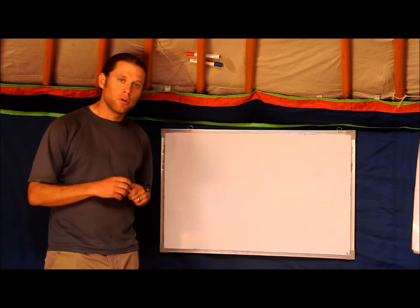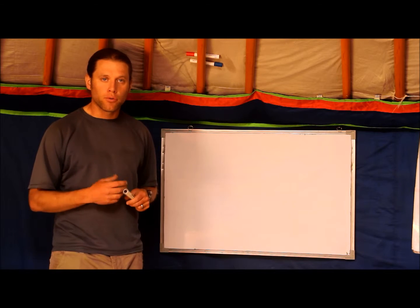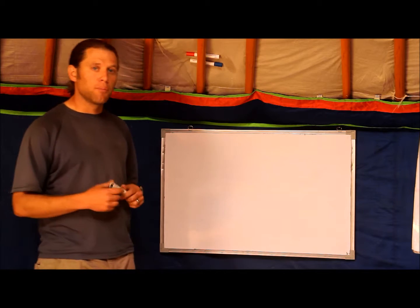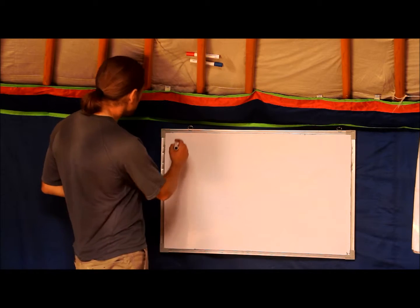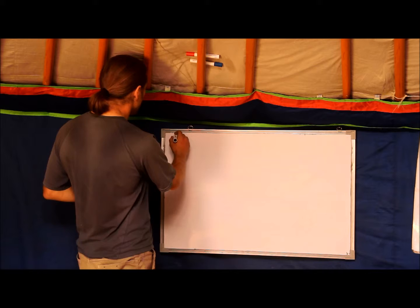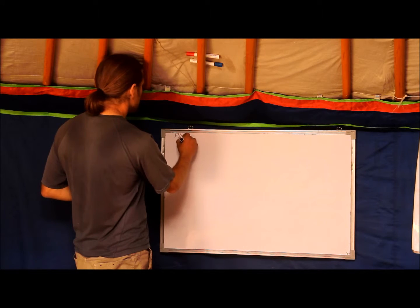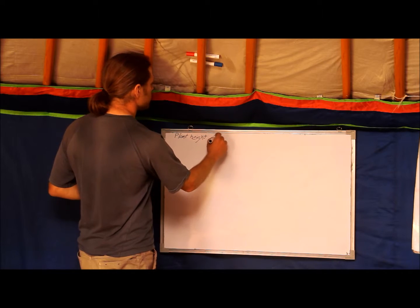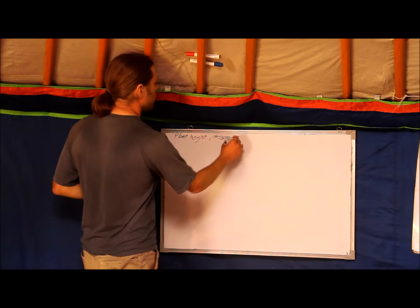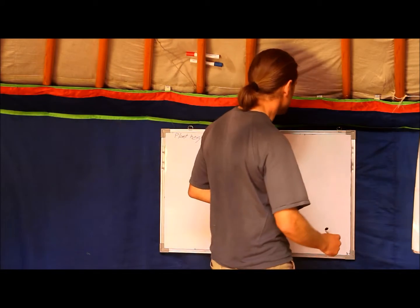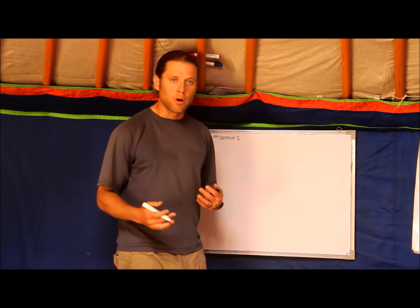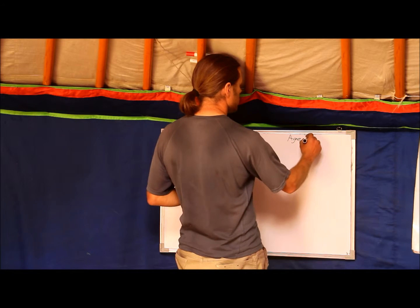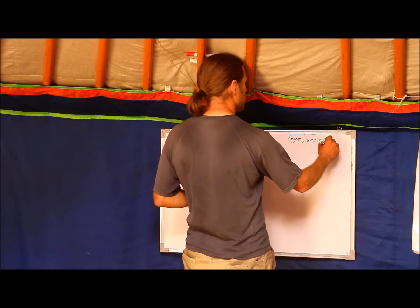What we use scatter plots for is if we have two variables that are both quantitative — so we have two variables, but we both have numbers to them. For example, if we were measuring some plants and we wanted to know the relationship between plant height and number of seeds. Or another example might be if we wanted to measure our GALI and we want to know the relationship between the age and the weight of our GALI.